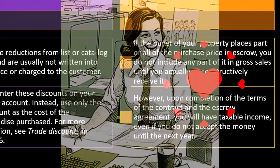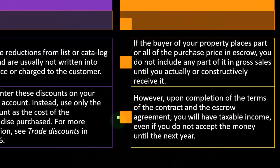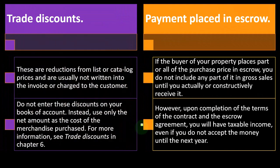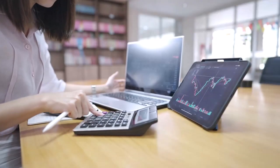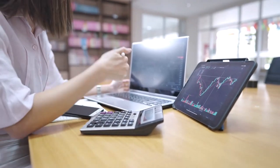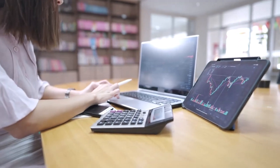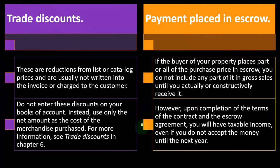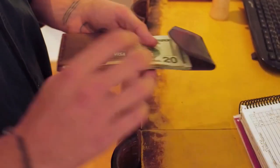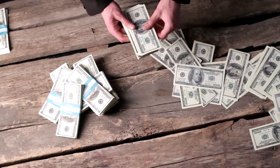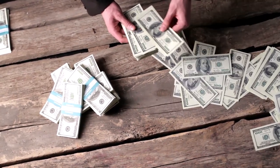However, upon completion of the terms of the contract and the escrow agreement, you will have taxable income even if you do not accept the money until the next year. Even if you say 'don't give me the money yet because I want to record it next year,' you can't do that — you now have constructive receipt. That's like someone wanting to pay you and you telling them not to pay you until next year; you already have the complete ability to get the money, so it's income once escrow is completed.